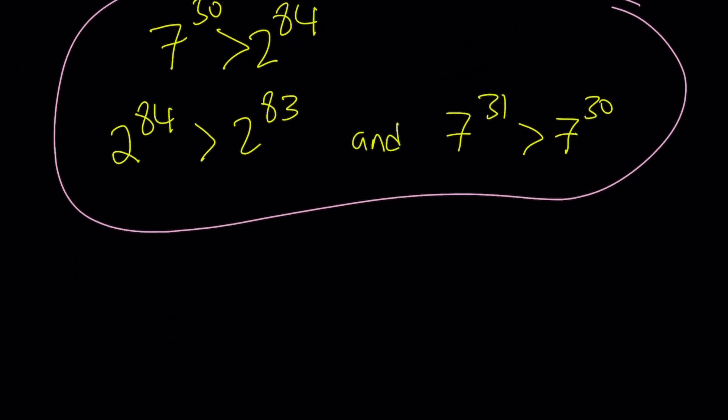All right. So from here, we can basically write a chain of inequalities. 7 to the power 31, that seems to be the largest one. So I'm going to start off with that one. 7 to the power 31 is greater than 7 to the power 30, which is greater than 2 to the power 84, which is greater than 2 to the power 83.